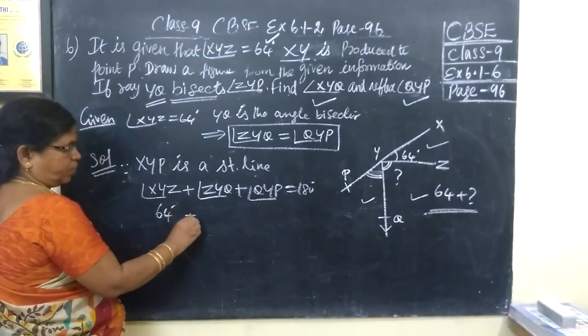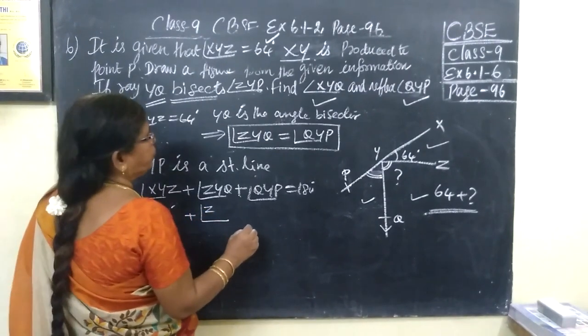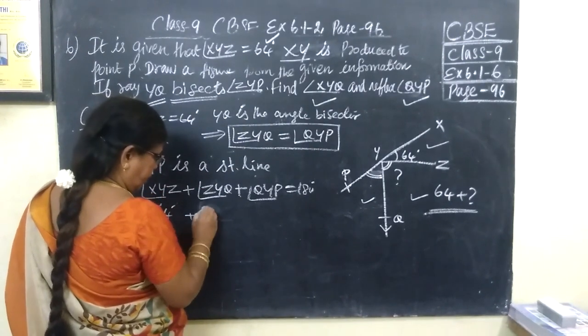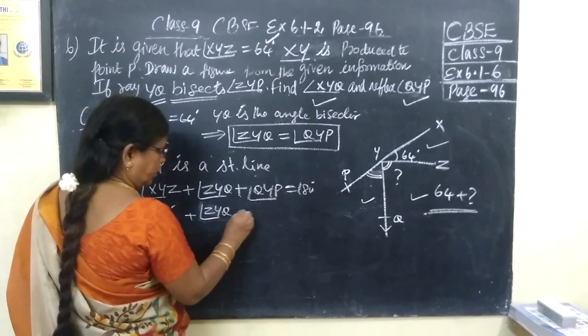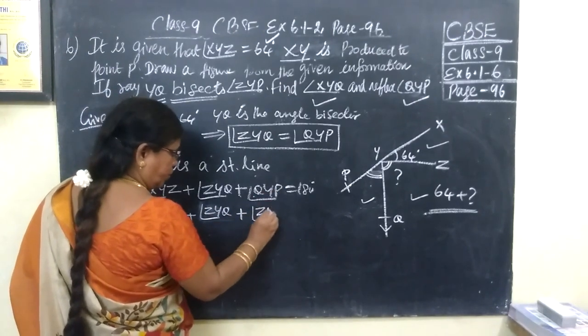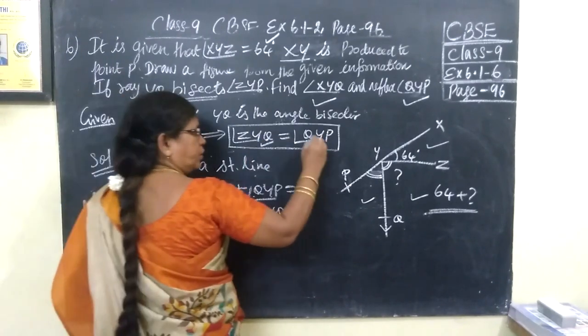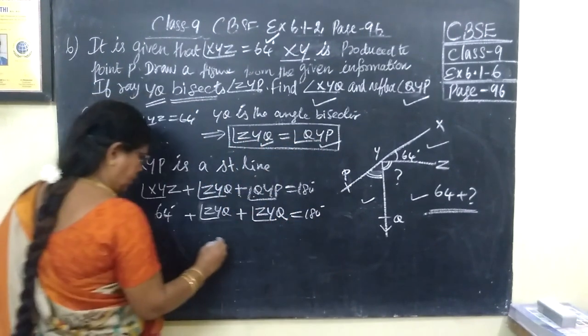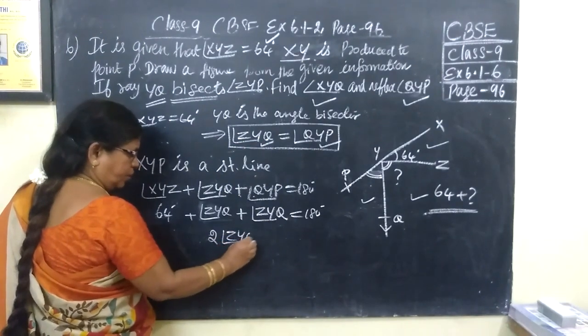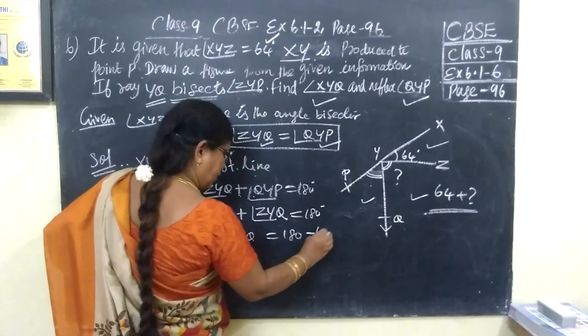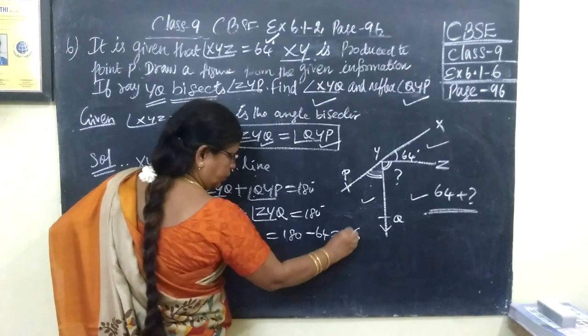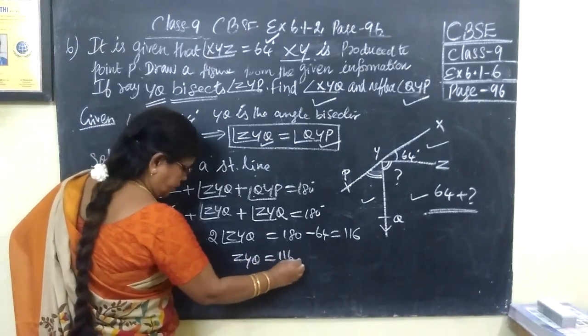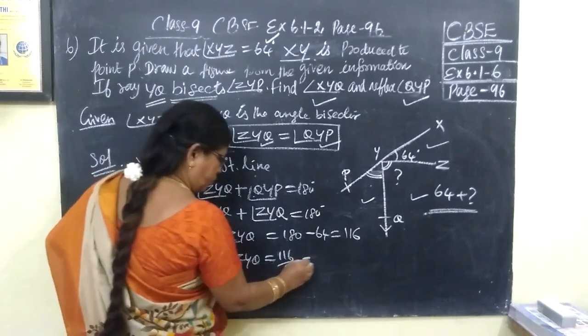This is 64 plus ZYQ. Want to find XYQ. Here you write ZYQ as it is. And then for QYP, you write ZYQ, because ZYQ is equal to QYP. So instead of QYP, you can write ZYQ. This is equal to 180 degree. So 2·ZYQ is equal to 180 minus 64, then 116. Therefore ZYQ is equal to 116 divided by 2, so 58.